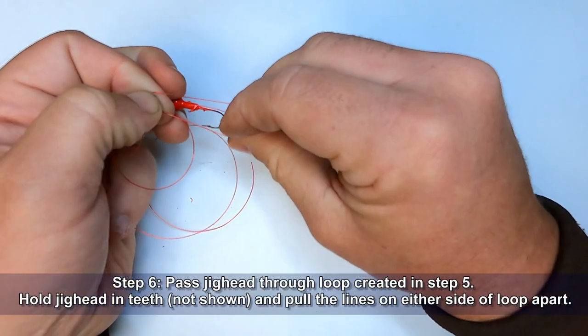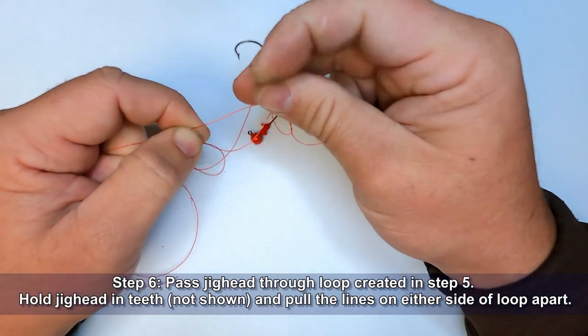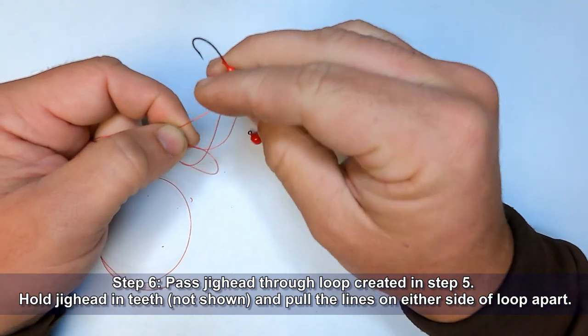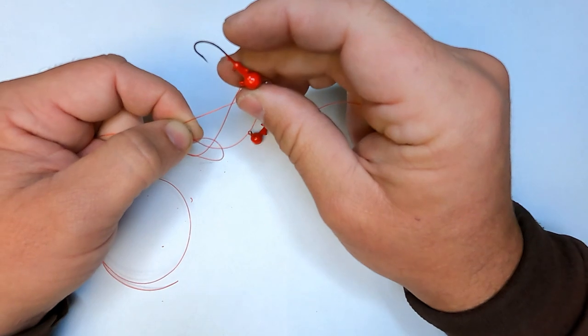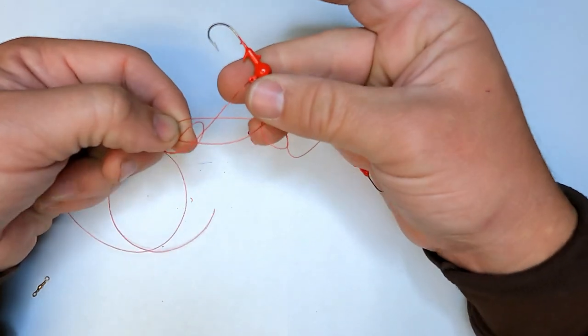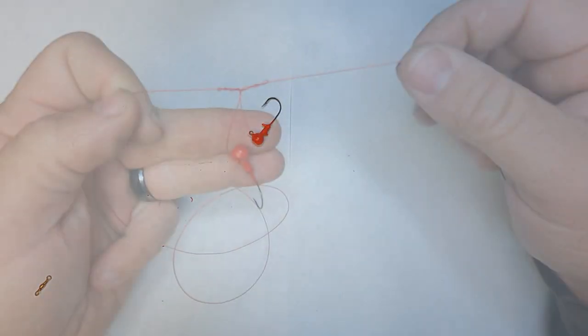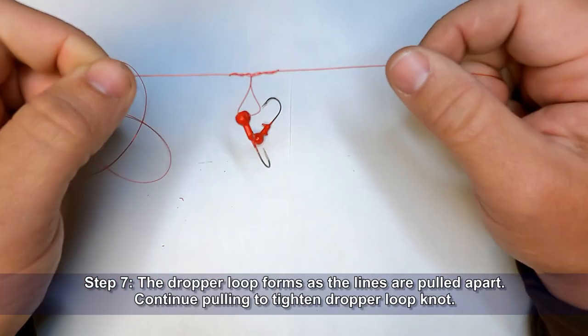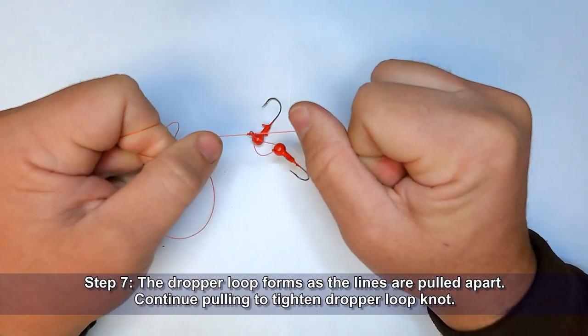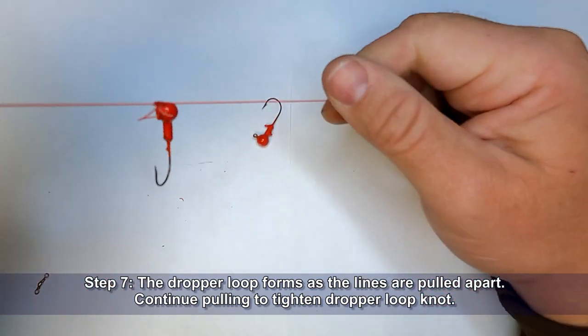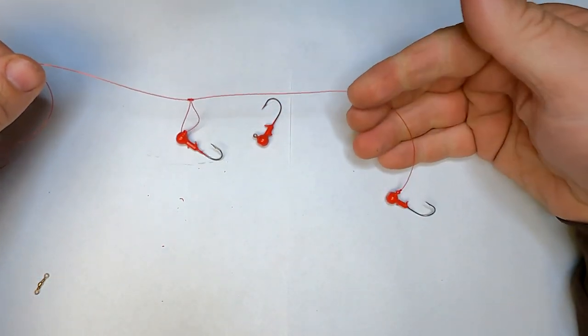Now doing that created a loop. So we're going to bring the jig head through there. And you guys can't see this, but what I'm going to do is put that jig head, we'll bite down on that jig head just to hold it in place. And then I'm going to pull the two lines apart and then I'll bring it back once I get this started here. Holding that in place basically forms that loop there. Just go ahead, pull that down on itself. And then what you've got, that's called a dropper loop.